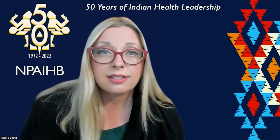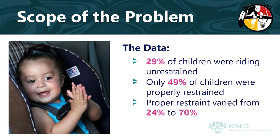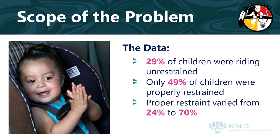The Native Children Always Ride Safe Study — Native CARS — is an example of a program that used data to create policy change. The goal of the project was to increase the proportion of children riding adequately restrained in motor vehicles in six Northwest tribal communities. To understand the magnitude of the health challenge — kids not being properly restrained in cars — the project collected data by observing how kids were riding in motor vehicles and briefly interviewing the vehicle driver. We found that for all participating tribal communities together, 29% of children were riding unrestrained, and only 49% of children were adequately restrained. Adequate restraint varied by community from 24% in one tribe to as high as 70% in another.